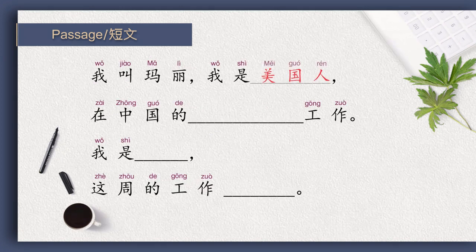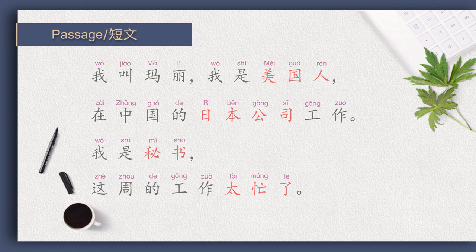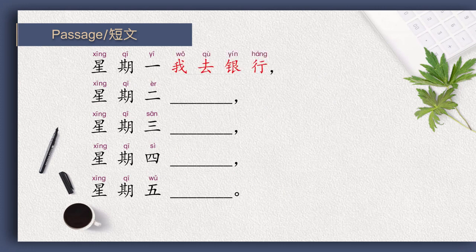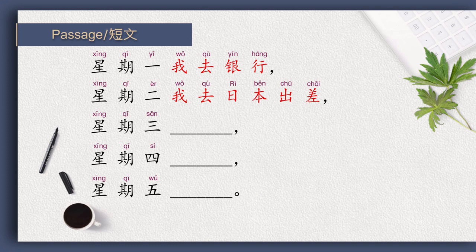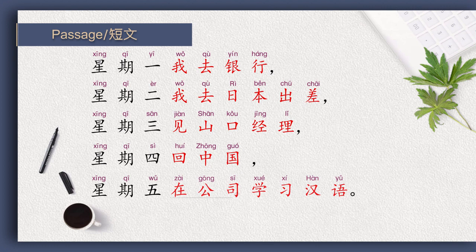我叫玛丽，我是美国人，在中国的日本公司工作。 我是秘书，这周的工作太忙了。 星期一我去银行，星期二我去日本出差，星期三见山口经理，星期四回中国，星期五在公司学习汉语。 很好。 Please read with me.